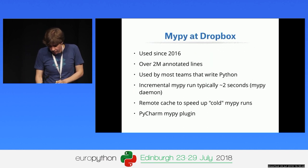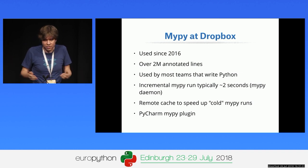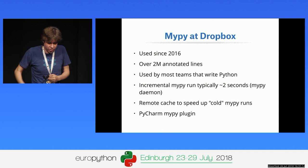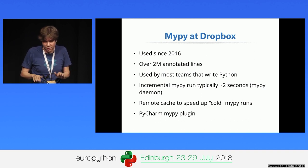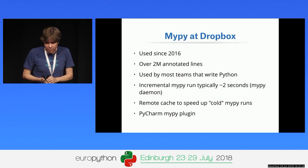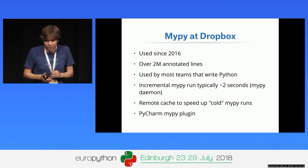At Dropbox we've been using mypy since 2015-2016. We currently have over 2 million annotated lines of Python, and virtually all teams using Python at Dropbox use mypy. We use the mypy daemon for incremental runs — typical incremental type checking takes about 2 seconds even with millions of lines of code. We also use a remote cache so the first run is fast, and we have an open-source PyCharm mypy plugin that makes it easy to run mypy and jump directly to errors.